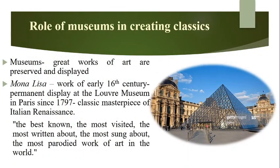What is the role of museums in creating classics? A museum is a place where all those great works of art are preserved and displayed. Da Vinci's painting, the Mona Lisa, is a work of the early 16th century. It has been on permanent display at the Louvre Museum in Paris since 1797. It was only because it was displayed in a museum that people were able to see and appreciate the Mona Lisa. It is still considered a classic masterpiece of the Italian Renaissance. The Mona Lisa is the best known, the most visited, the most written about, the most sung about, and the most parodied work of art in the world.